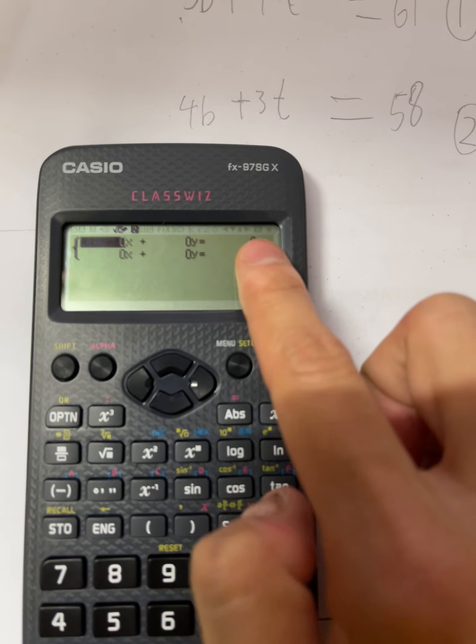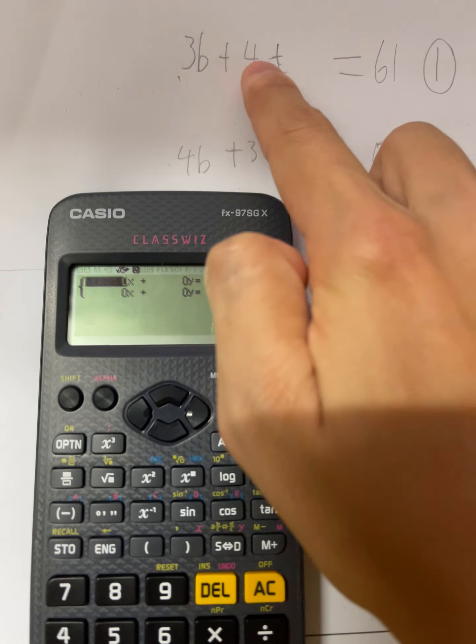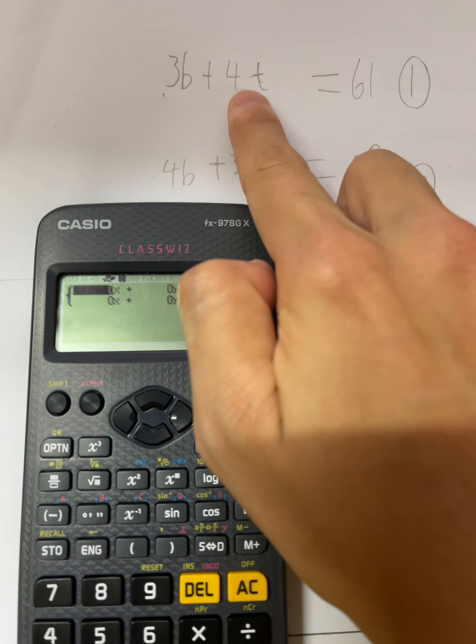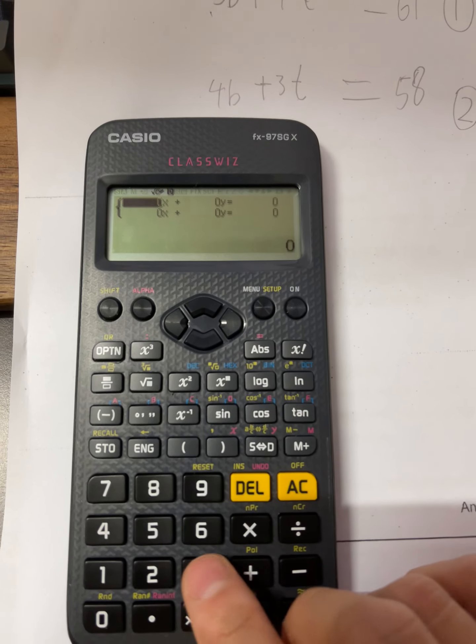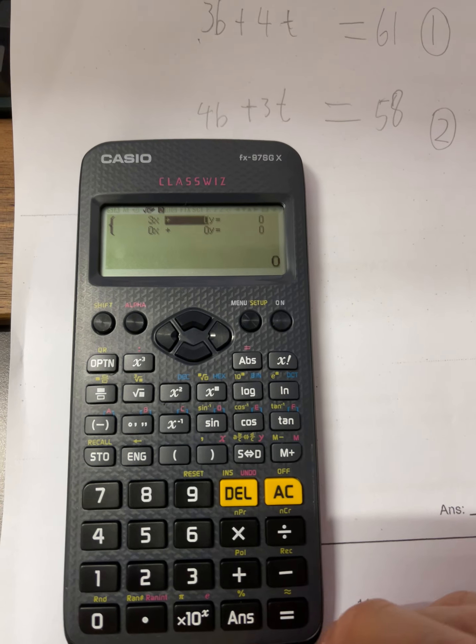They ask you to key in the x and the y and the constant. So you key in, in this case, you key in the three, the four, and the 61. Okay good, so I key in three, enter.